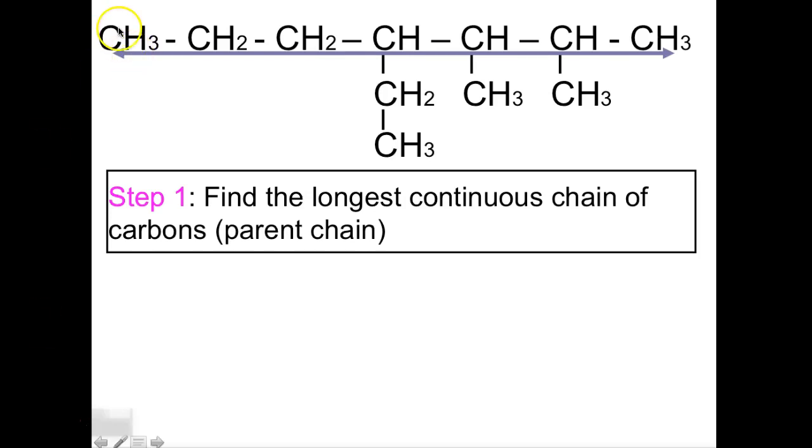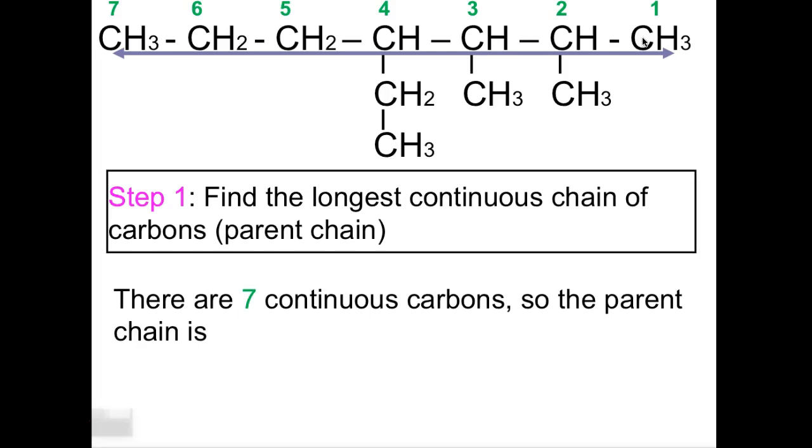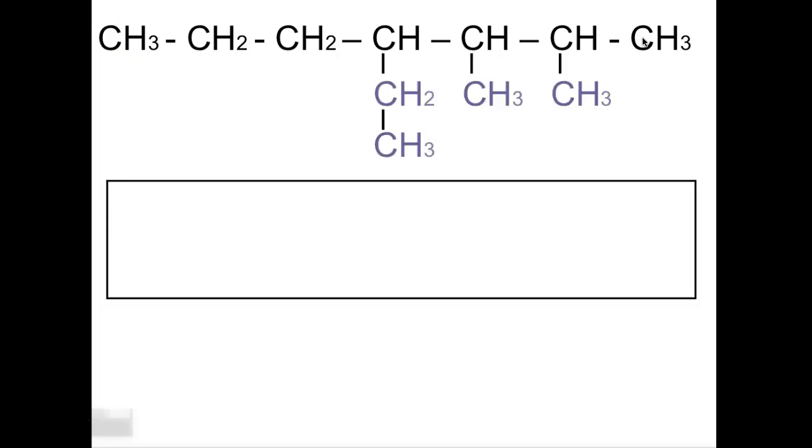So we have one, two, three, four, five, six, seven carbons here. So that's the longest carbon chain, seven carbons. So then what we do is they're continuous carbon. So this is the parent chain, it's going to be called heptane. And I'm keeping the A and E as red because we're going to look at it a little bit further.